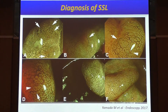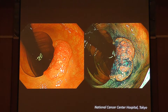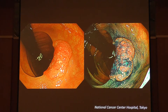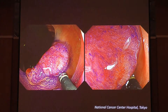Let me finish my introduction and continue with the Q&A session. Let's begin with a not-so-difficult case. This is Case 1. The lesion is located in the transverse colon. Let me show the figures: this is the NBI and NBI with magnification, and this is the chromoendoscopic magnification.